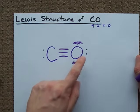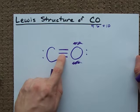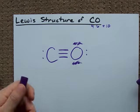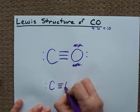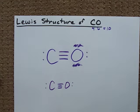Oxygen still has its eight. One, two, three, four, five, six, seven, eight. Here we are with the Lewis structure of CO. Triple bond between the C and the O, and a lone pair of electrons on each atom. That's the way it goes. Best of luck.